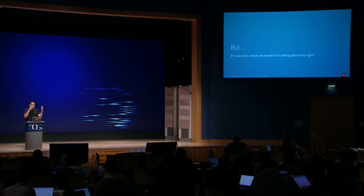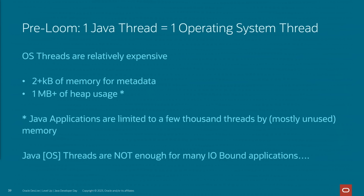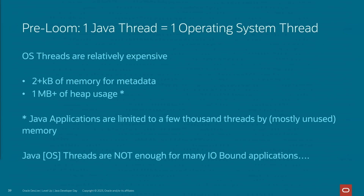Now, if it was this simple and you could just keep adding threads forever, we wouldn't be having this conversation. At some point, the CPU ceases to be your concern. The current Java concurrency model tells you to use one thread for every task, and behind the scenes, Java creates an OS thread for each Java thread. But operating system threads are relatively expensive — each one requires a couple of kilobytes of metadata and also reserves about one megabyte of heap whether the thread needs it or not. In practice, for most platforms, you will be limited to a few thousand threads — plenty for a CPU-bound application but too little for an IO-bound application.